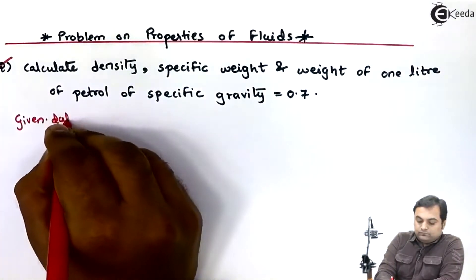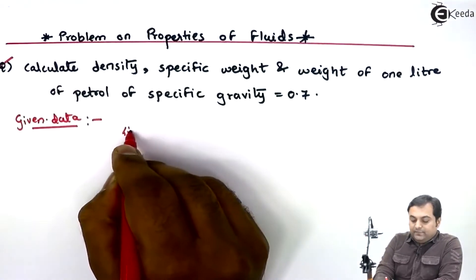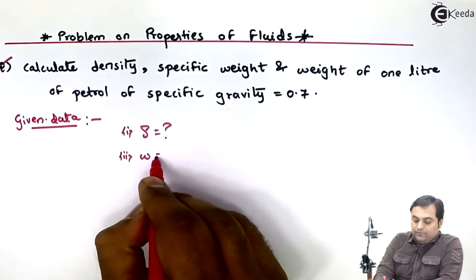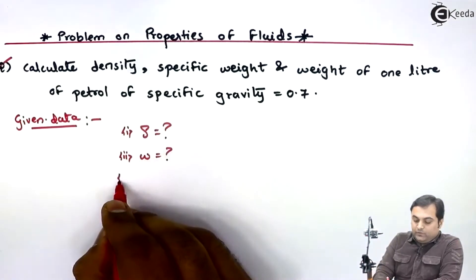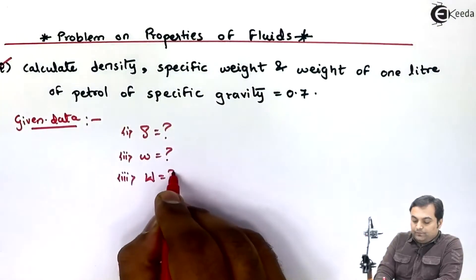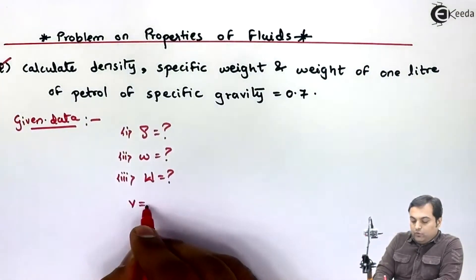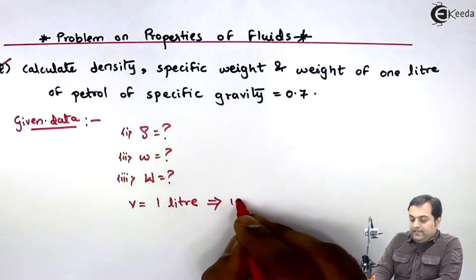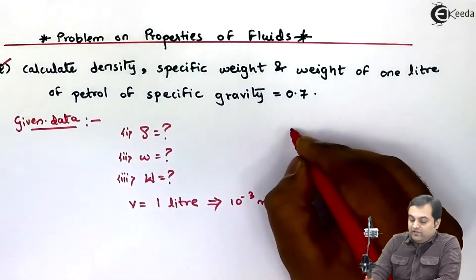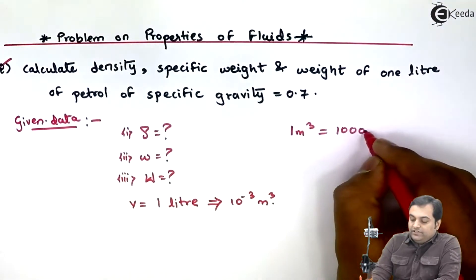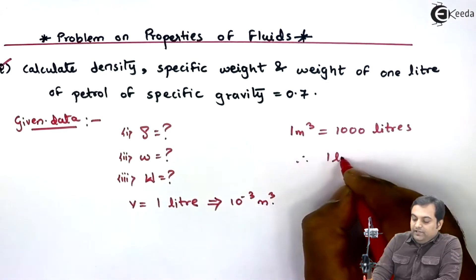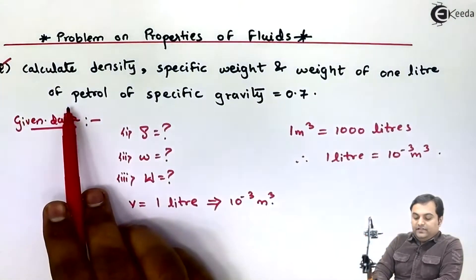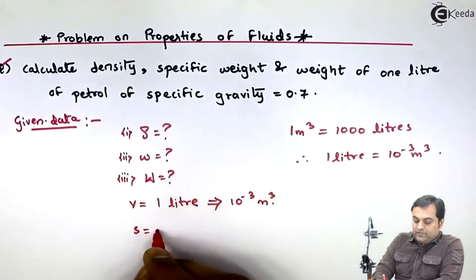We need to calculate density — mass density denoted by rho — specific weight denoted by small w, and weight denoted by capital W of 1 liter of petrol. Volume is given as 1 liter, and since 1 meter cube holds 1000 liters, 1 liter equals 10 raised to minus 3 meter cube. Specific gravity S is given as 0.7.